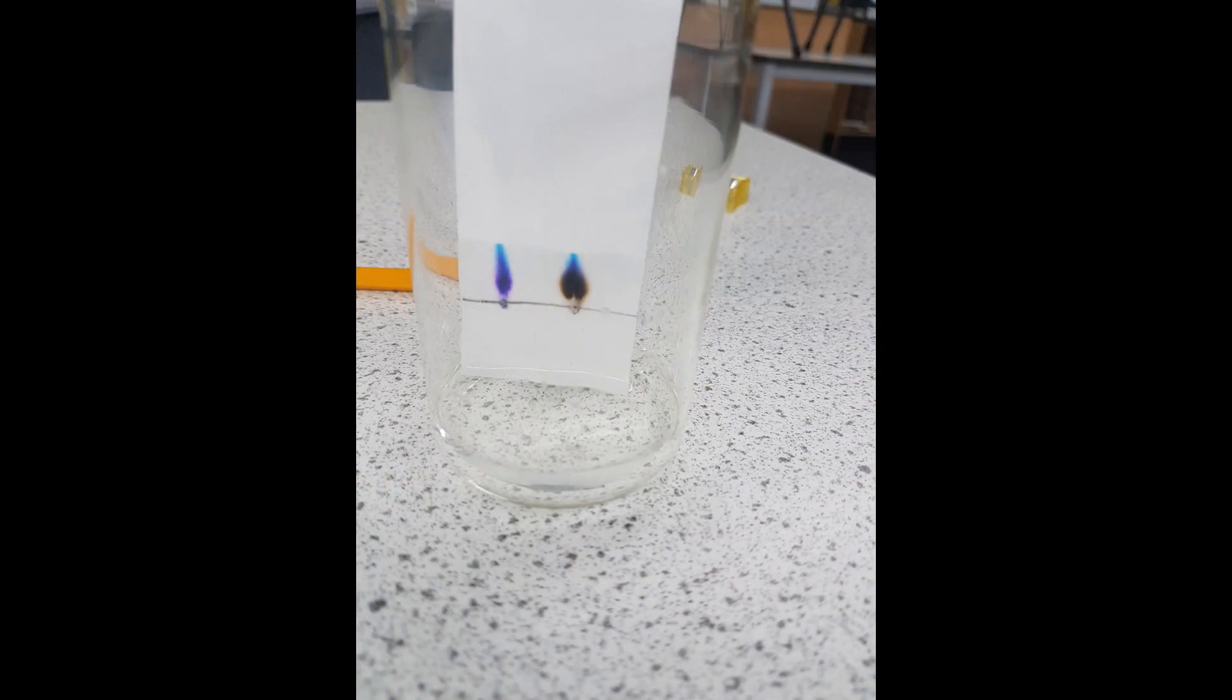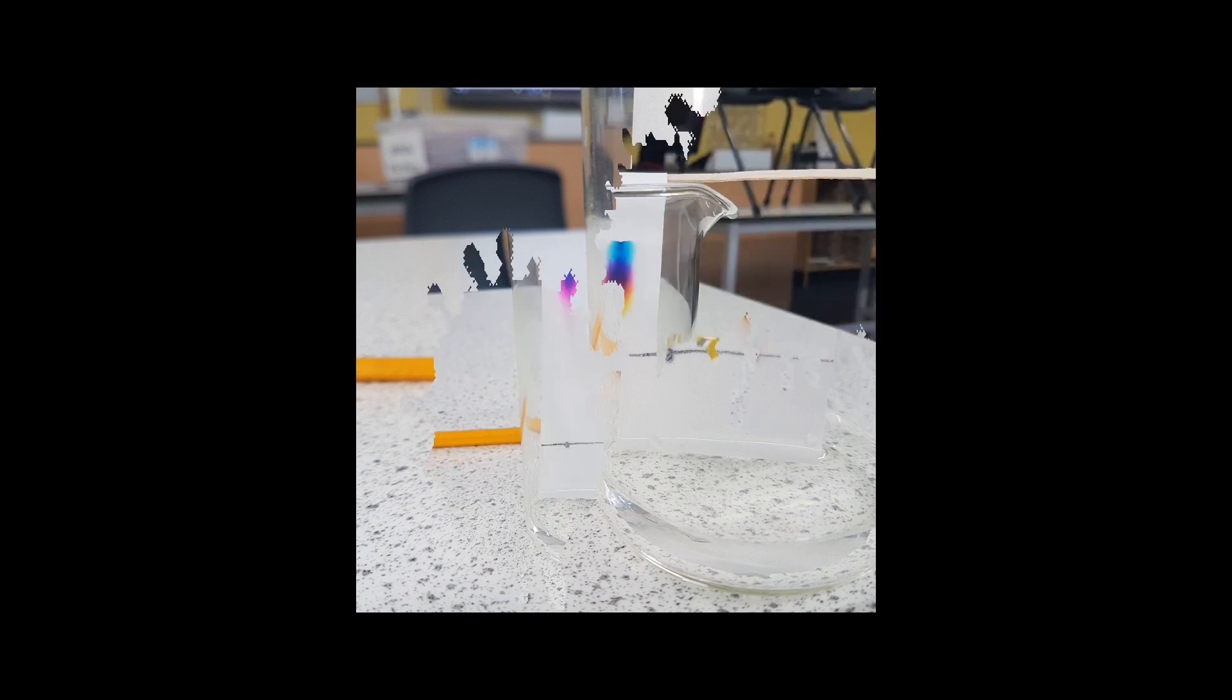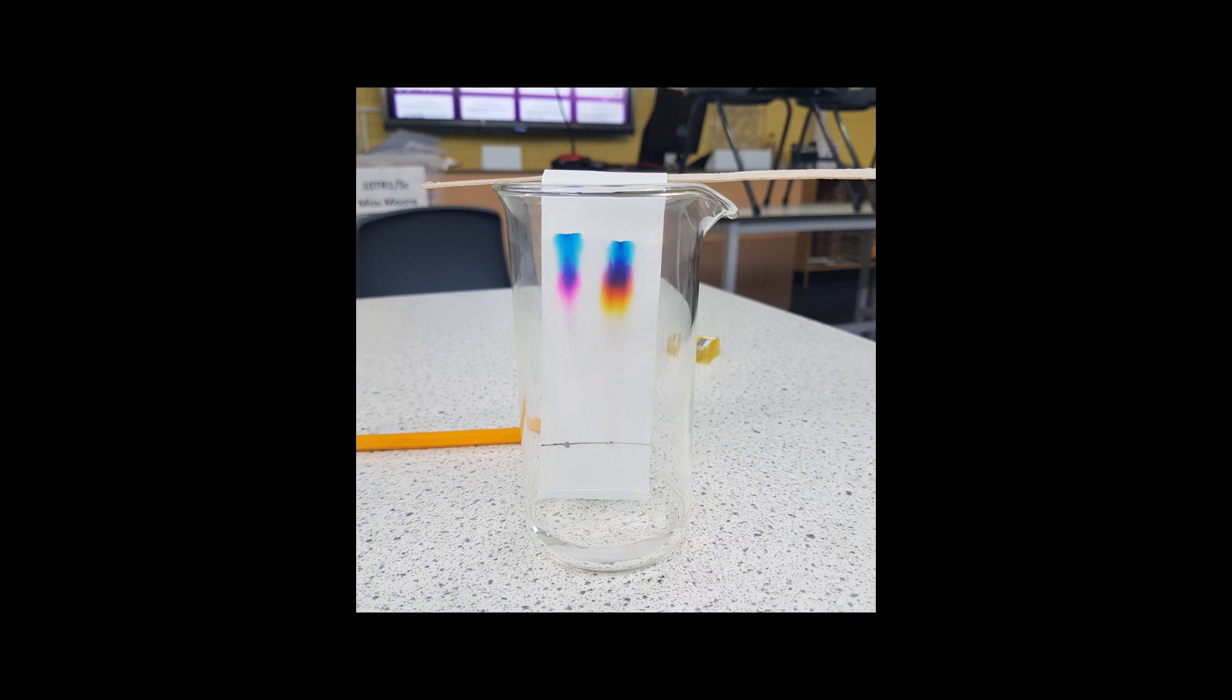And so what you'll start to notice is over time the colors within the felt tip pens will start to separate, and they form some really beautiful and amazing colors. And it shows you what this color that you had originally, what colors it was made up of. So then what you could do is you can work out what's called the RF value. You've got to give this experiment quite a bit of time.